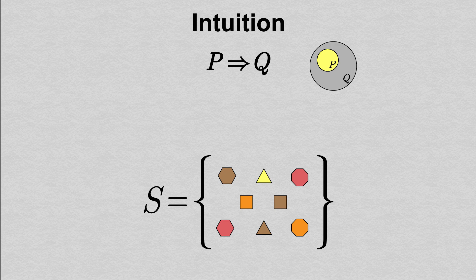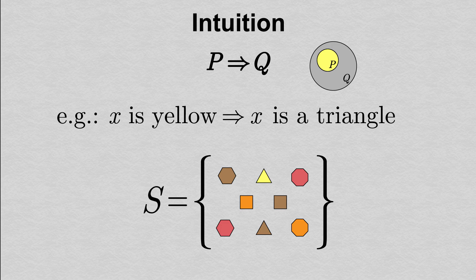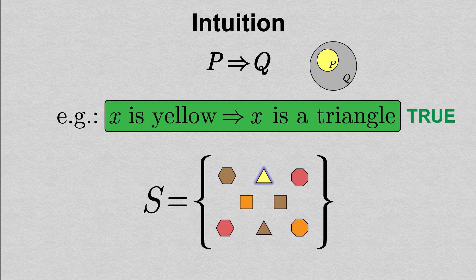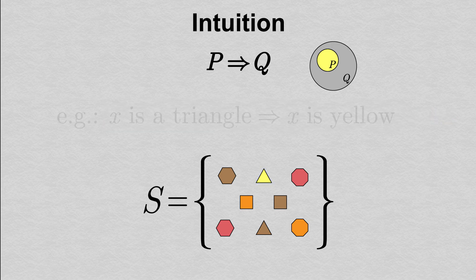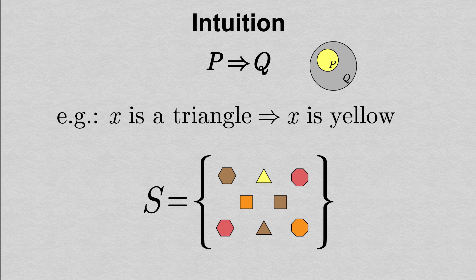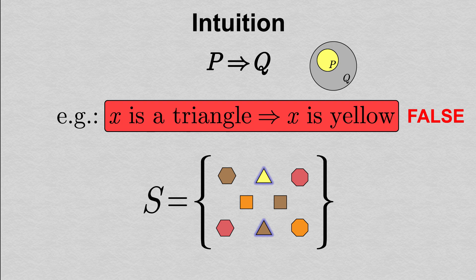Our original observation is expressed in writing by the statement that x is yellow implies x is a triangle. This is an example of a true implication, because in the set S, a shape being yellow does force it to be a triangle. The statement that x is a triangle implies x is yellow is also a well-formed implication. However, we can see that this implication is false, because not every triangle in S is yellow.